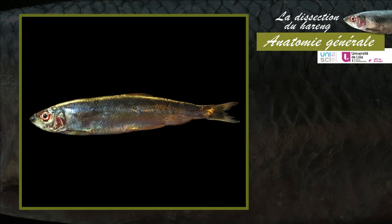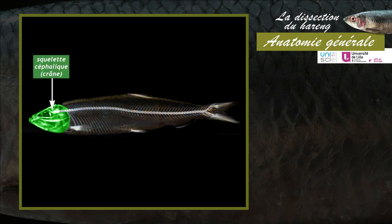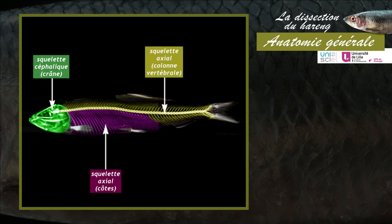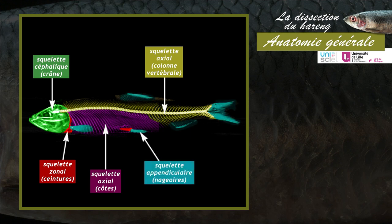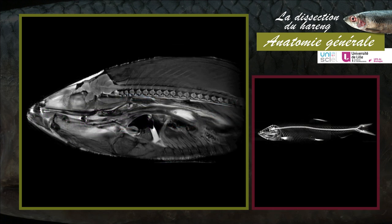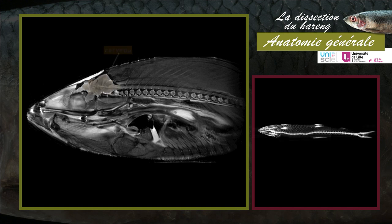Le squelette est divisé en quatre parties : le squelette céphalique ou crâne, le squelette axial qui comprend la colonne vertébrale et les côtes, le squelette zonal correspondant aux ceintures pectorales et pelviennes, et le squelette appendiculaire constitué par les os et les rayons des nageoires. Le crâne et la colonne vertébrale protègent les structures du système nerveux central, le cerveau et la moelle épinière.